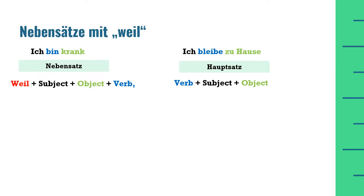If you take an A2 exam and you write any Nebensatz and Hauptsatz following this pattern and you forget this comma, the examiner may deduct some marks for this. Now let's look at the Hauptsatz sentence structure again: the verb will be at the first position, which will be followed by the subject, and at the third position there will be the object — again, in place of object there can be a preposition or anything else.